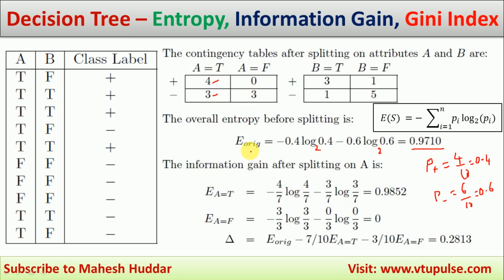Once you calculate the entropy of the whole dataset, to calculate the information gain of A or B, first we need to calculate the entropy of individual possible values. For A, we need entropy of true and entropy of false. The entropy when A equals true: there are seven true examples with four positive and three negative. The equation becomes minus 4/7 log 4/7 base 2 minus 3/7 log 3/7 base 2. Once you solve it, you get 0.9852.